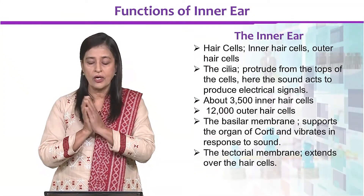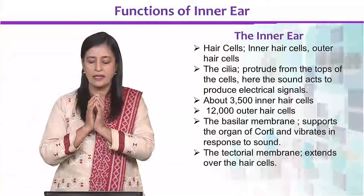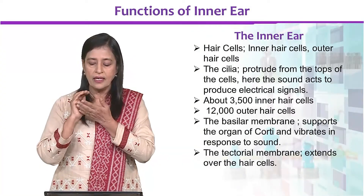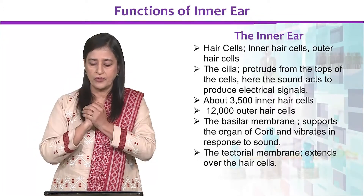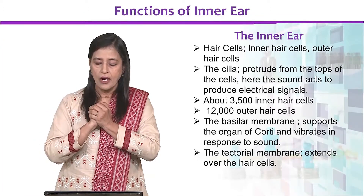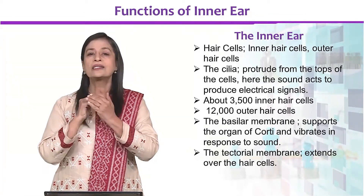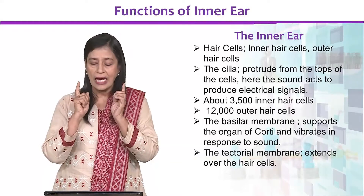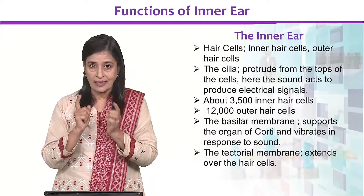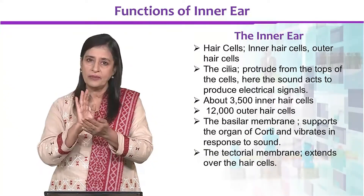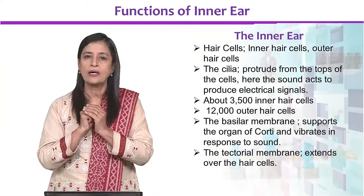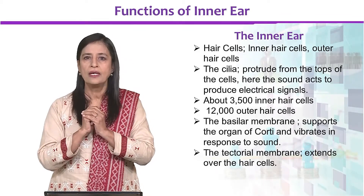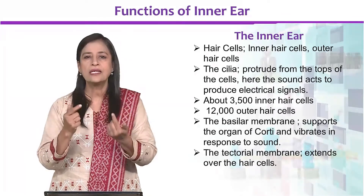There are inner hair cells and outer hair cells, with cilia on top of the cells. Sound acts to produce electrical signals — up until now we had vibration and pressure, but these electrical signals must travel to the brain.